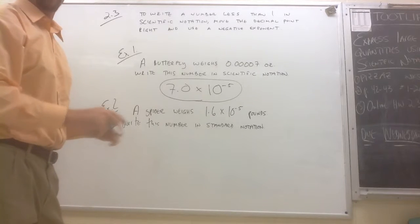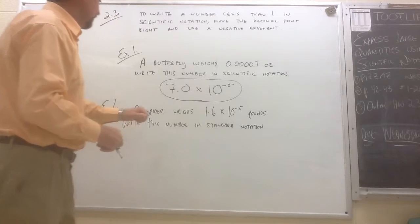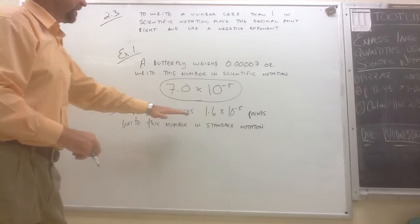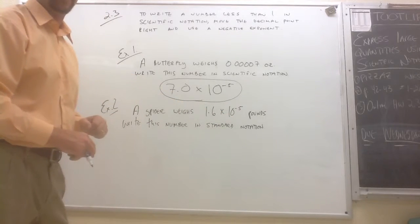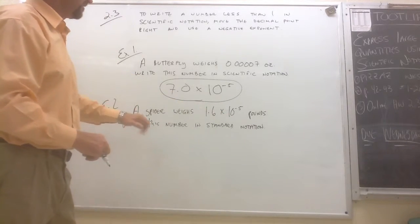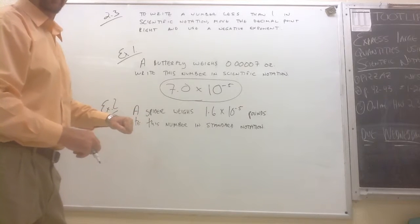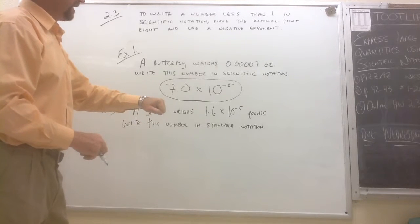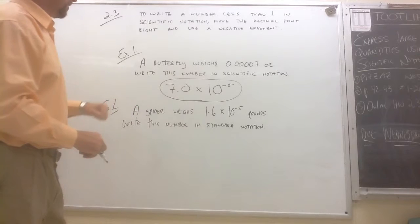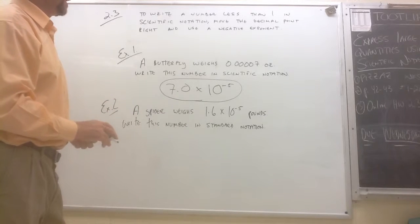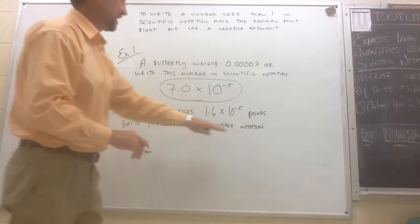Okay, and it works the opposite way too. If we want to take a number that's written in scientific notation and write it in standard notation, we're going to do the same thing. Remember, we have a spider that weighs 1.6 times ten to the negative fifth pounds. Write this number in standard notation.